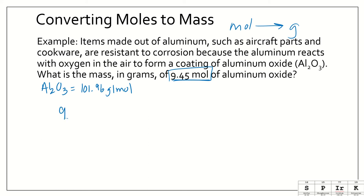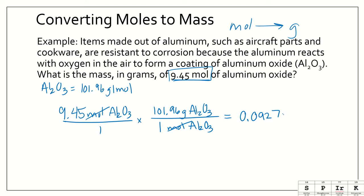We start with what we have, and that's 9.45 mole Al2O3. We're going to use that molar mass that we just added up as our conversion factor to convert to grams. We know that there are 101.96 grams of Al2O3 for every 1 mole of Al2O3. Mole cancels with mole, and we're going to be left with our unit of gram. When we multiply this across, we get our answer.